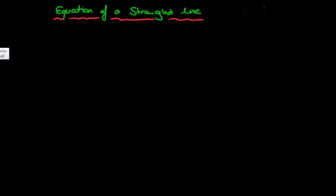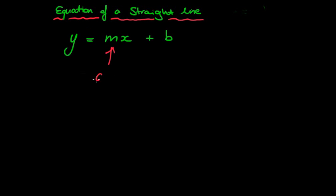So first of all, can you remember what the equation of a straight line looks like? Well, hopefully you said y equals mx plus b. Can you remember what all the letters stand for? That's always the tricky bit. m, hopefully, you remember it stands for the gradient — the gradient of a straight line, which talks about how steep a line is.